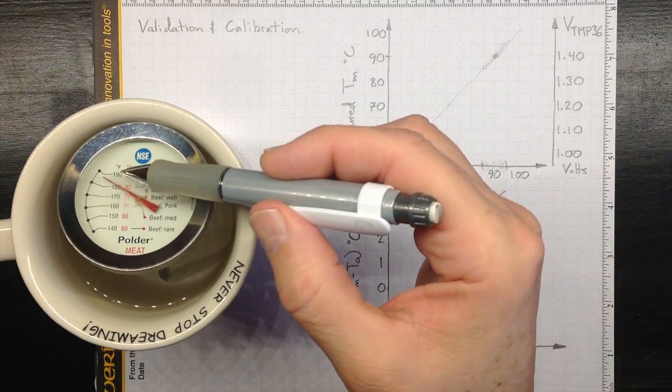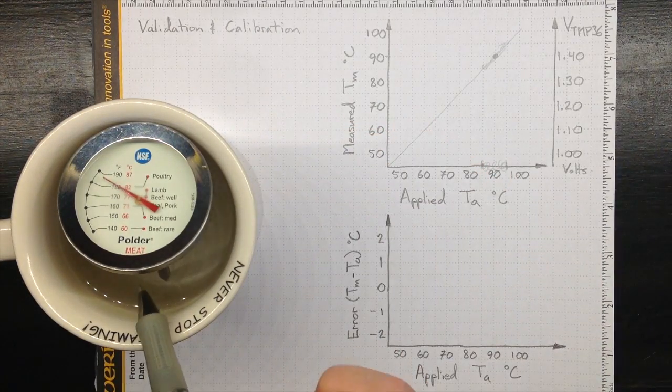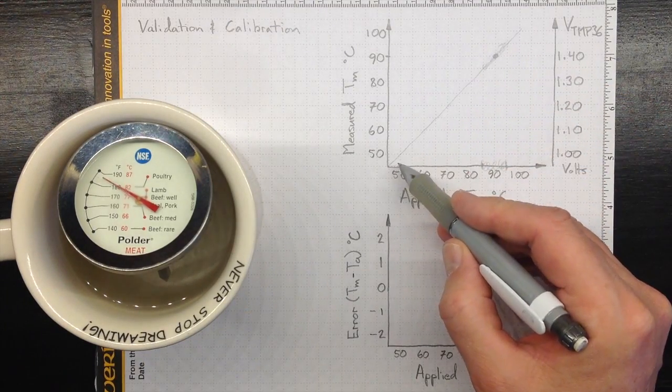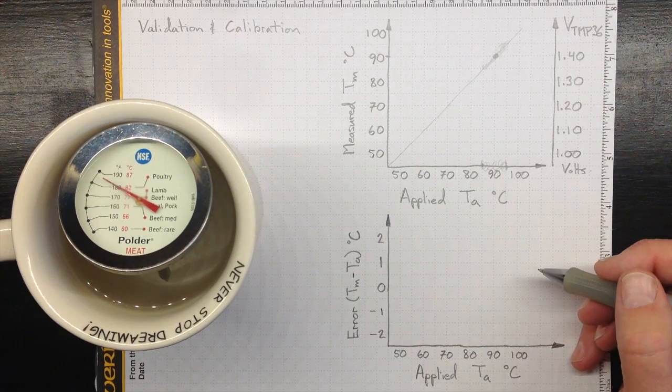The indicated temperature is dropping with time, so if I knew what the temperature was inside the mug, I could add some more points to this graph. But I don't know what the temperature is inside the mug.